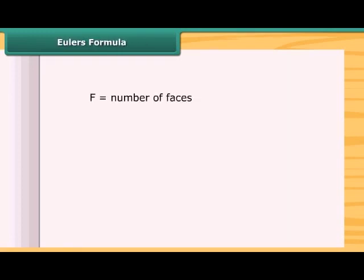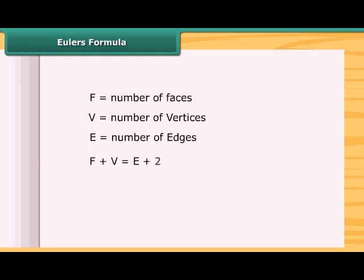If F stands for number of faces, V stands for number of vertices, and E stands for number of edges, then the Euler's formula is F plus V is equal to E plus 2. That is, F plus V minus E is equal to 2.